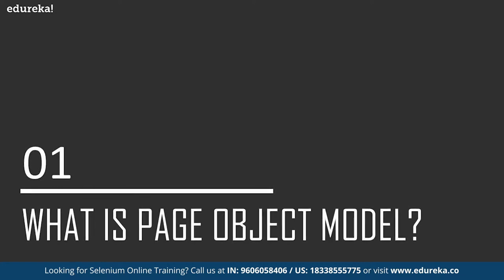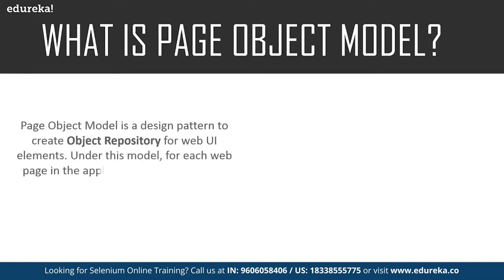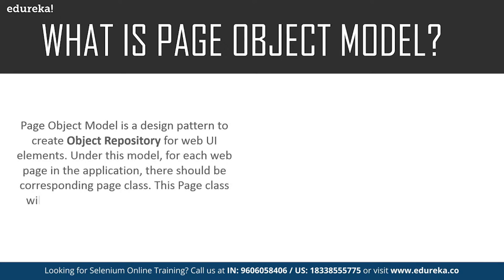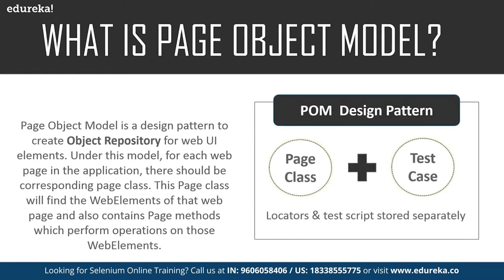Page object model is a design pattern to create an object repository for the web user interface elements. Under this model, for each web page in the application, there should be a corresponding page class. This page class will find the web elements of that web page and also contains the page methods which perform operations on those web elements. It consists of a page class along with the test case class, and locators and test scripts are stored separately in page object model. The tests then use the methods of this page object model class whenever they need to interact with the UI elements of that page.